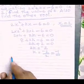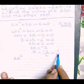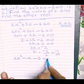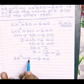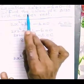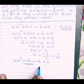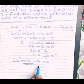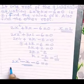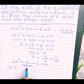Now substitute k = -1 back into the equation. 2x² + kx becomes 2x² - x - 6 = 0. So the equation is 2x² - x - 6 = 0. For the second part, we need to find the other root by finding all solutions of this quadratic equation — either by factorization or by applying the quadratic formula.